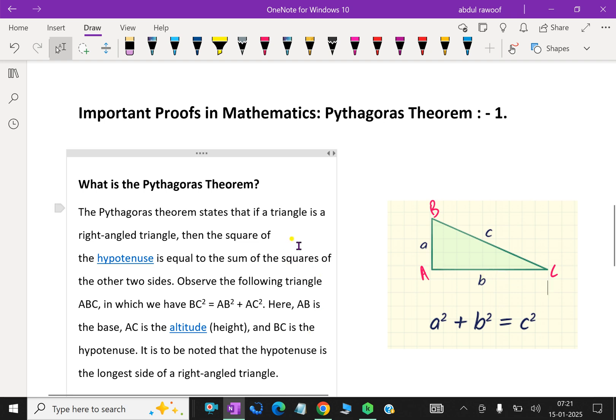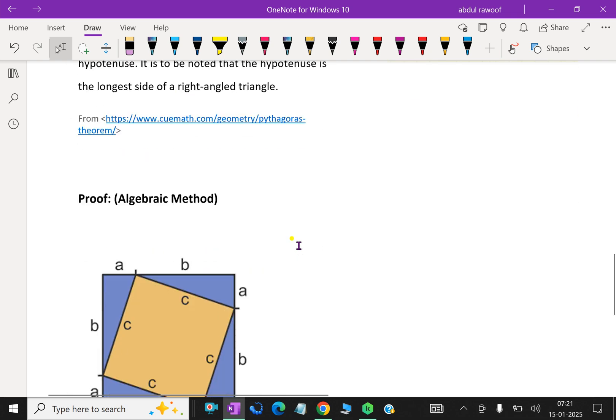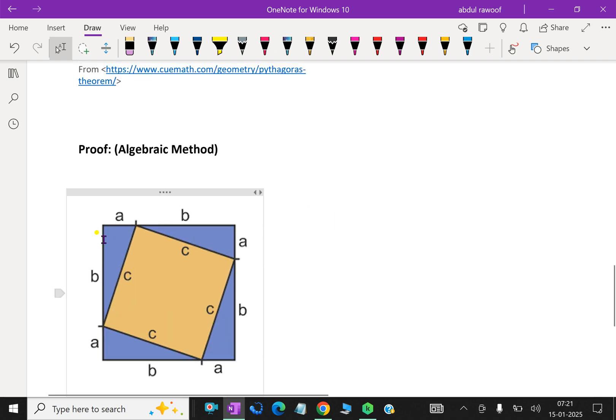Now let us start how to prove it. Consider this is a square PQRS. Then select a point here, let it be A, B, C.